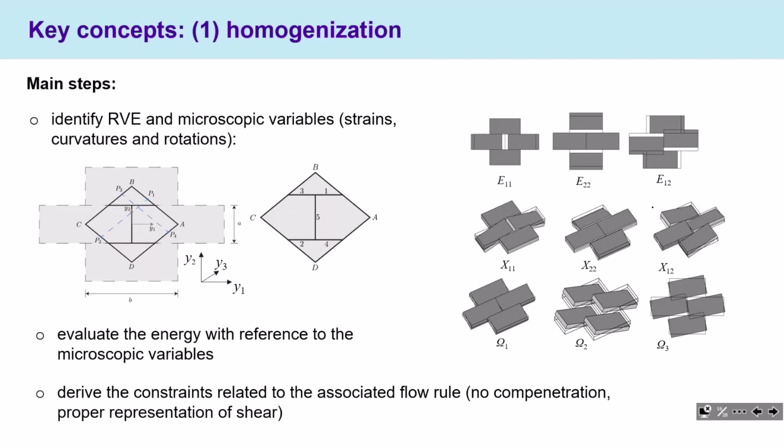To apply homogenization, we identify a repetitive pattern called the reference volume element (RVE). At the RVE level, we identify the microscopic variables — basically the strains, curvatures, and rotations. Using these microscopic variables, we evaluate the energy with reference to the microscopic variables and derive the constants related to the imposition of the flow rule.